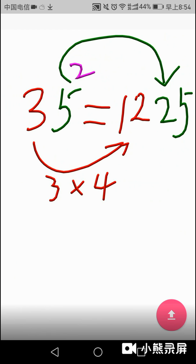The left part, 12, is equal to 3 times 4. 3 is the left part of 35. And 4 is the neighboring number of 3, larger than 3. So, we can get the result of the square of 35 is 1225. Thank you.